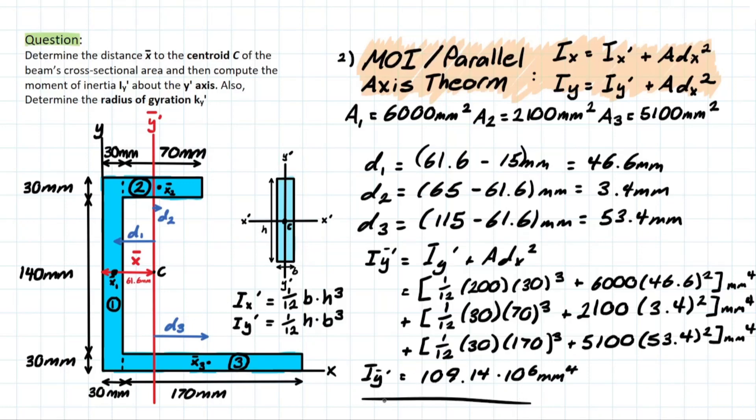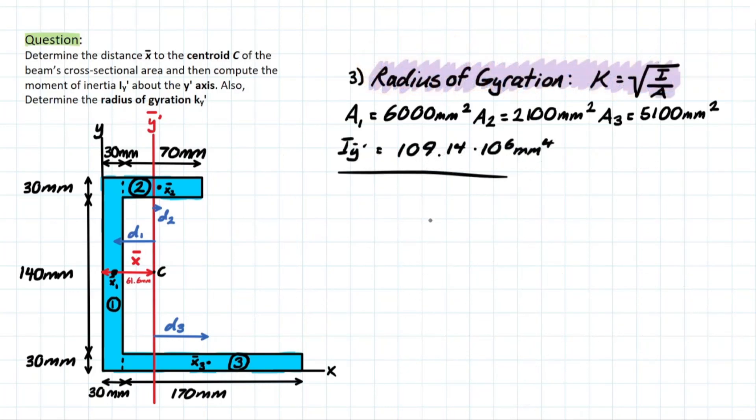Then lastly, we can use this value to calculate our radius of gyration. So radius of gyration in our case is pretty simple, where we have K Y prime is going to equal the moment of inertia that we calculated about that axis over the total area of our composite shape.